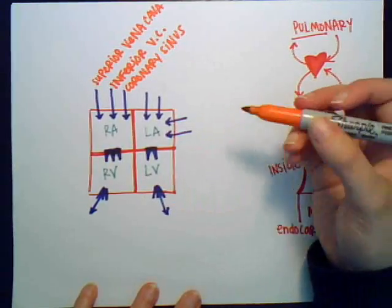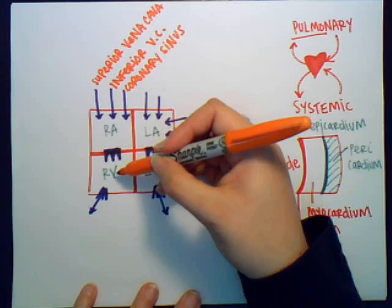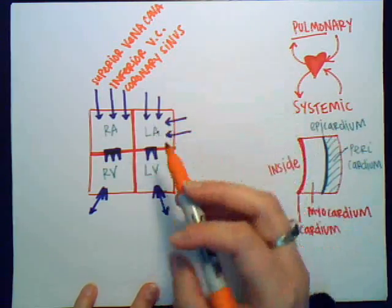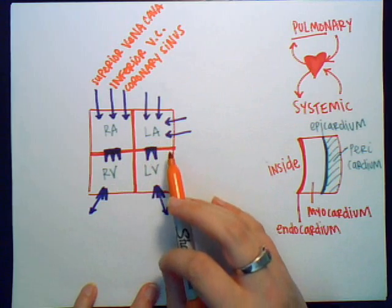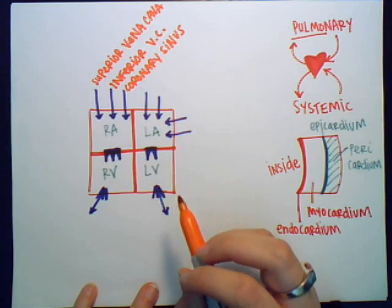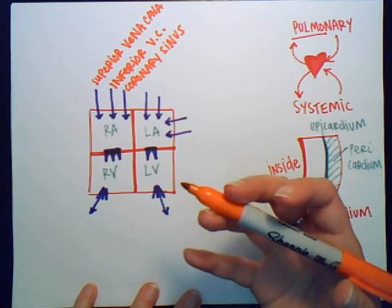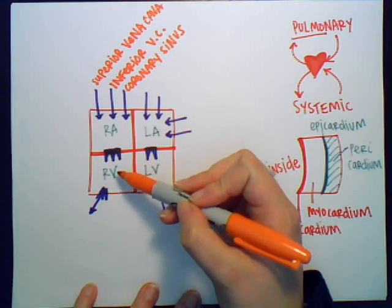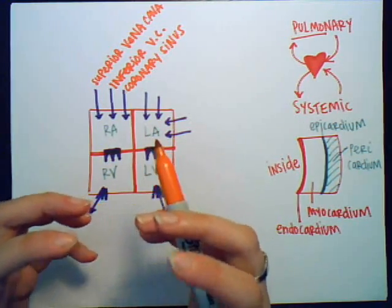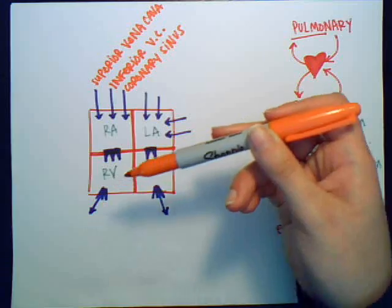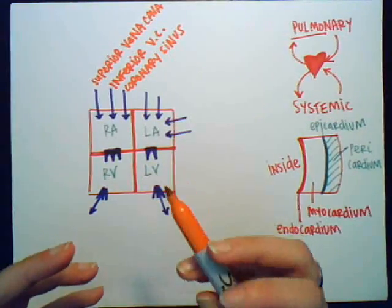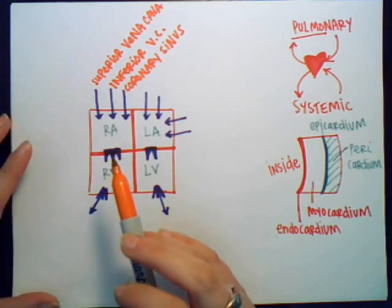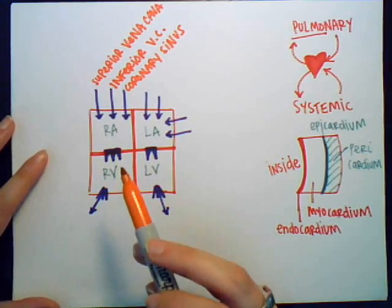Those are the three vessels entering the right atrium. Blood then travels down into the ventricle through the tricuspid valve. On the right side it's tricuspid, on the left side it's bicuspid. The purpose of the valve is to prevent blood from flowing back into the atrium when the ventricles are contracting — when the ventricle squeezes to pump blood out, the increased pressure could force blood back, and we don't want that.